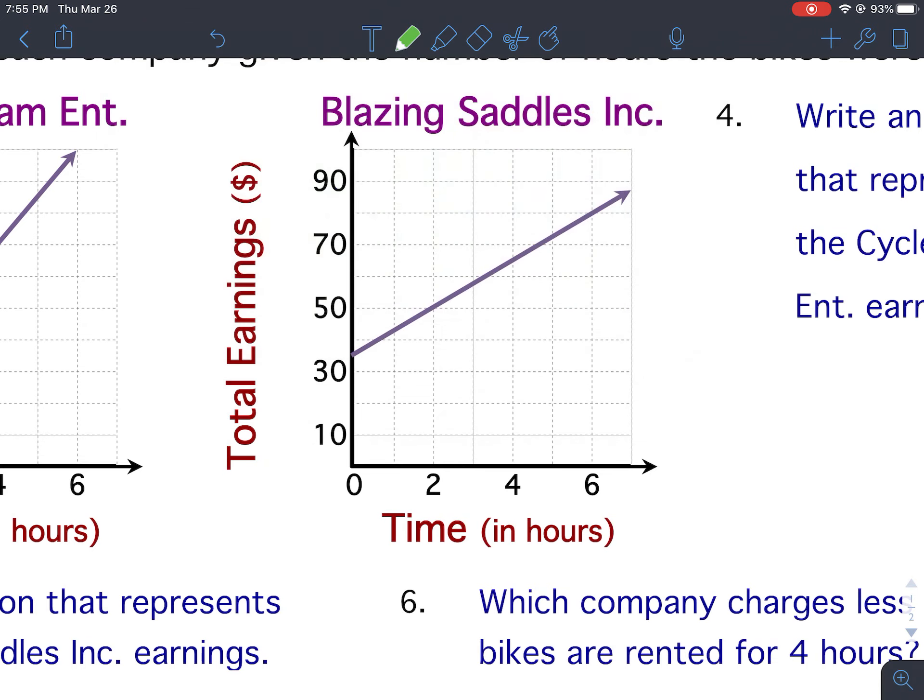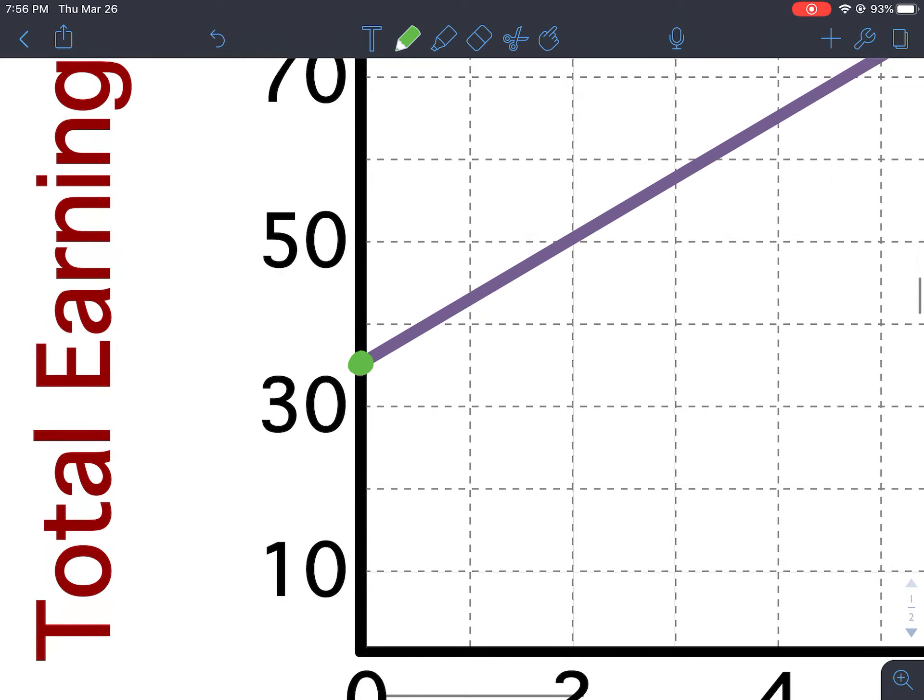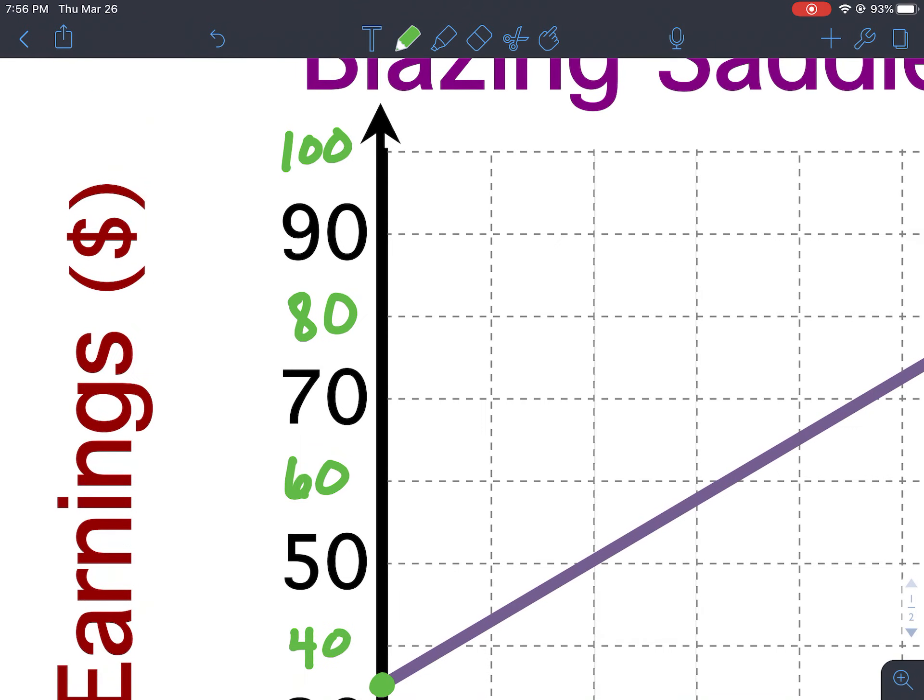So right here is your initial value. Remember, your initial value is the y-intercept, so it's where the graph touches the y-axis. So for this one, each grid line is going by 10, so 10, 20, 30, 40, 50, 60, 70, 80, 90, the top would be 100.